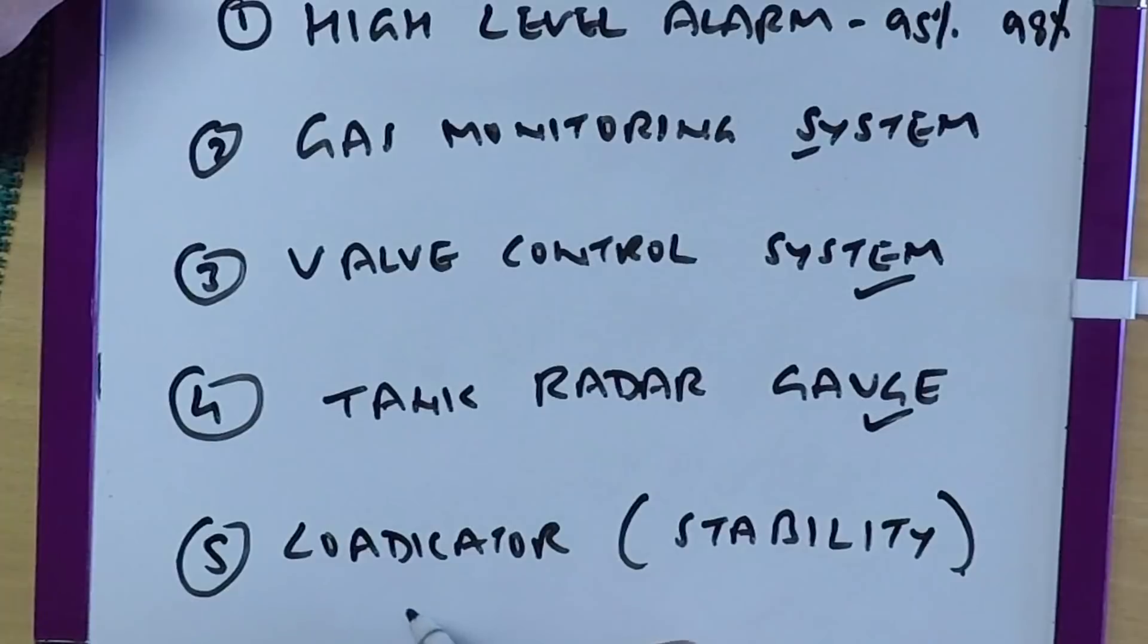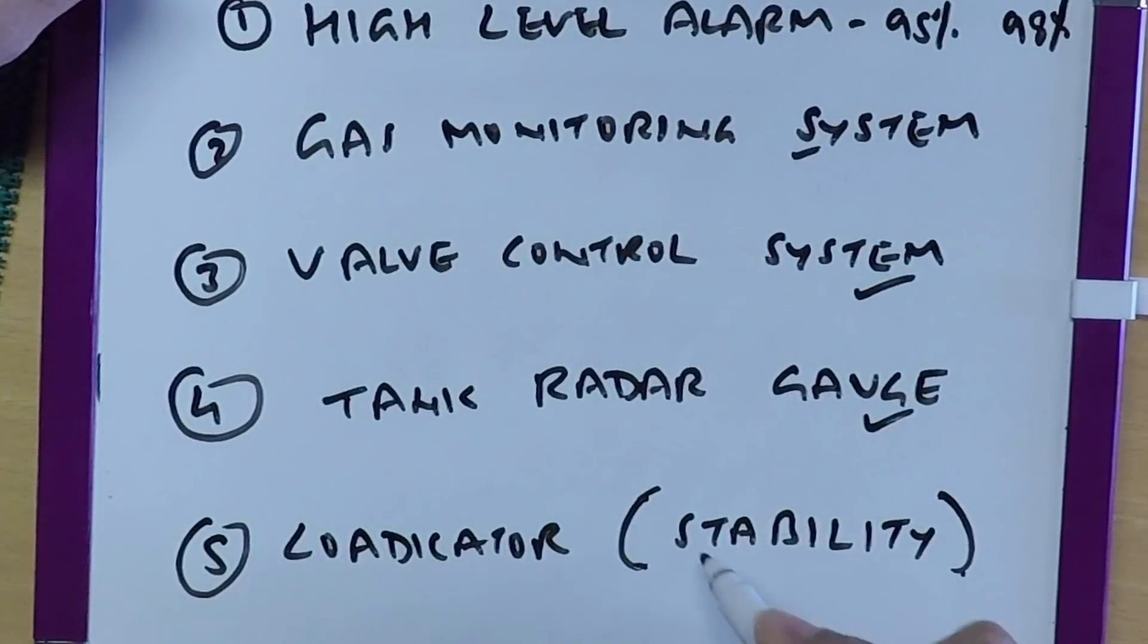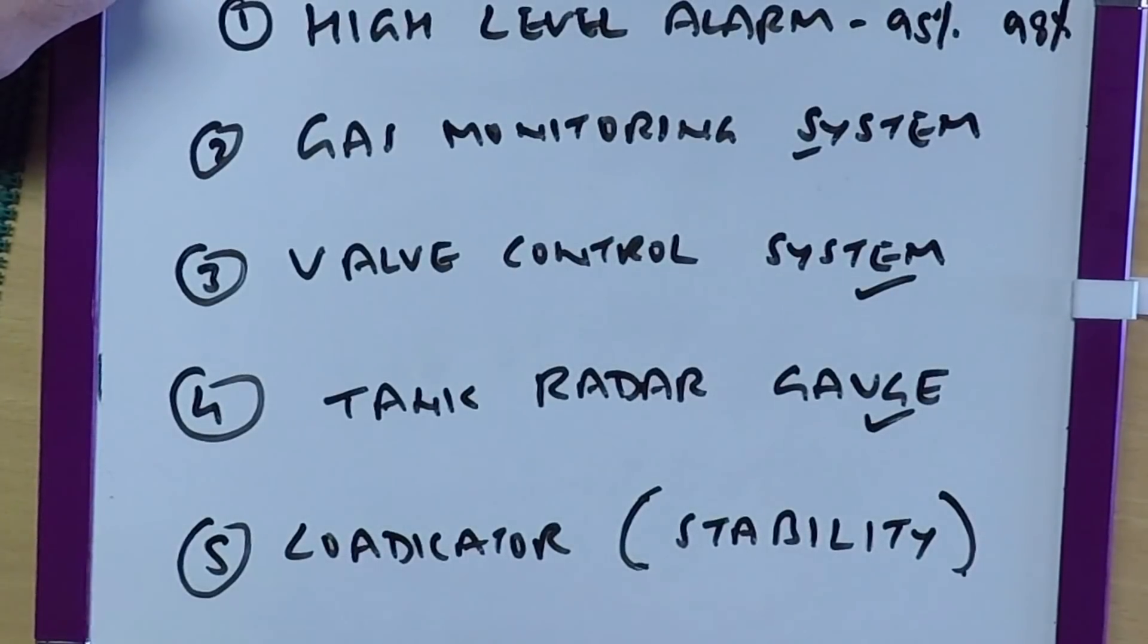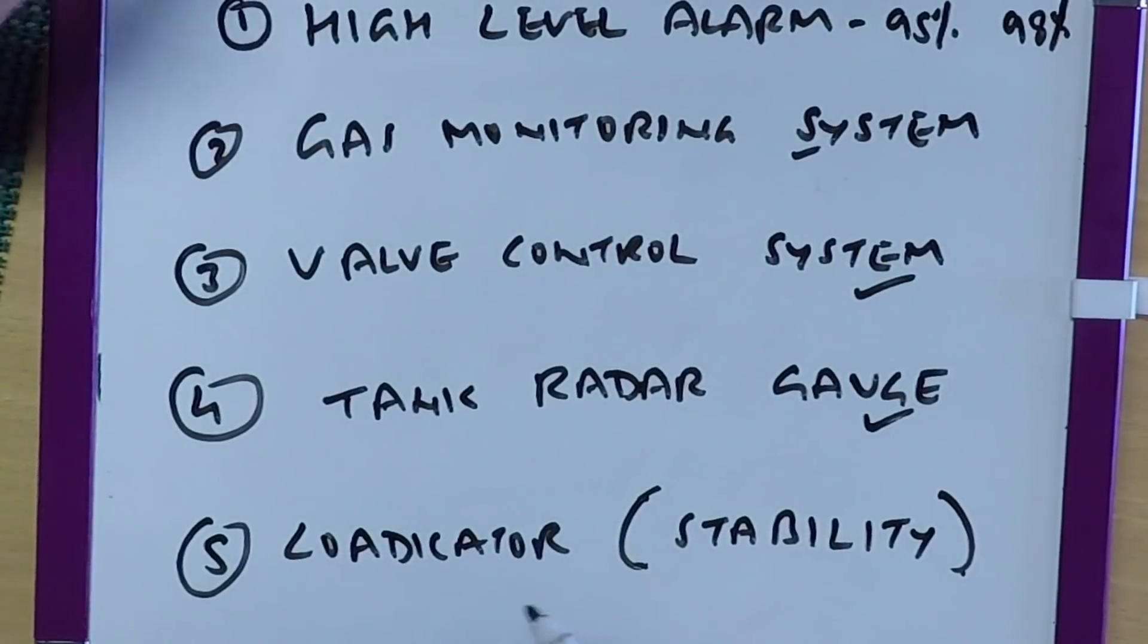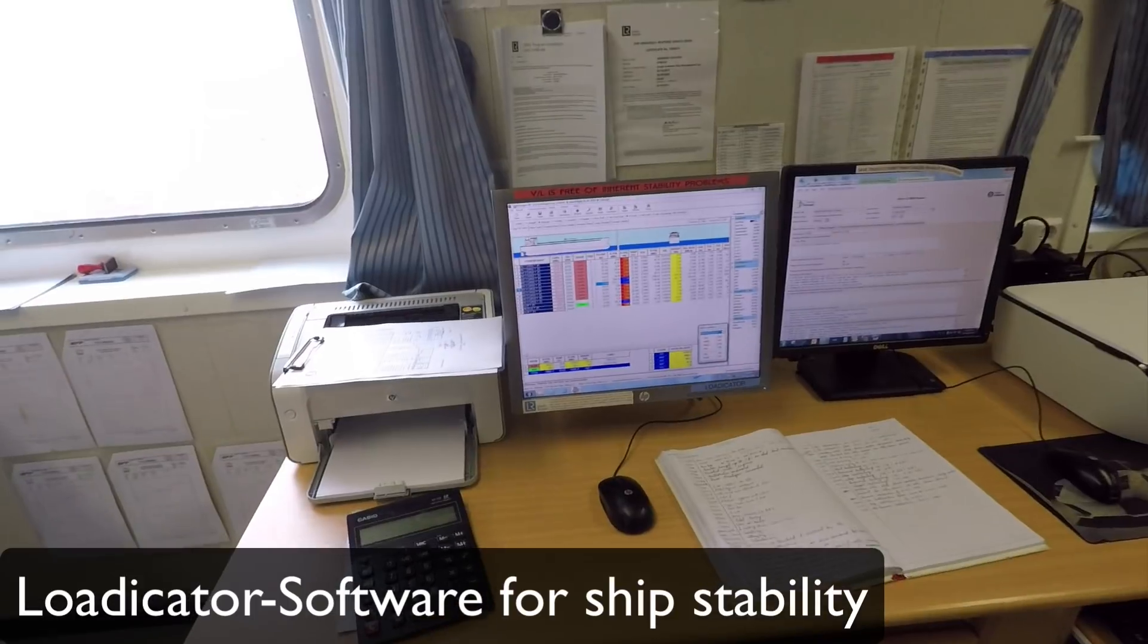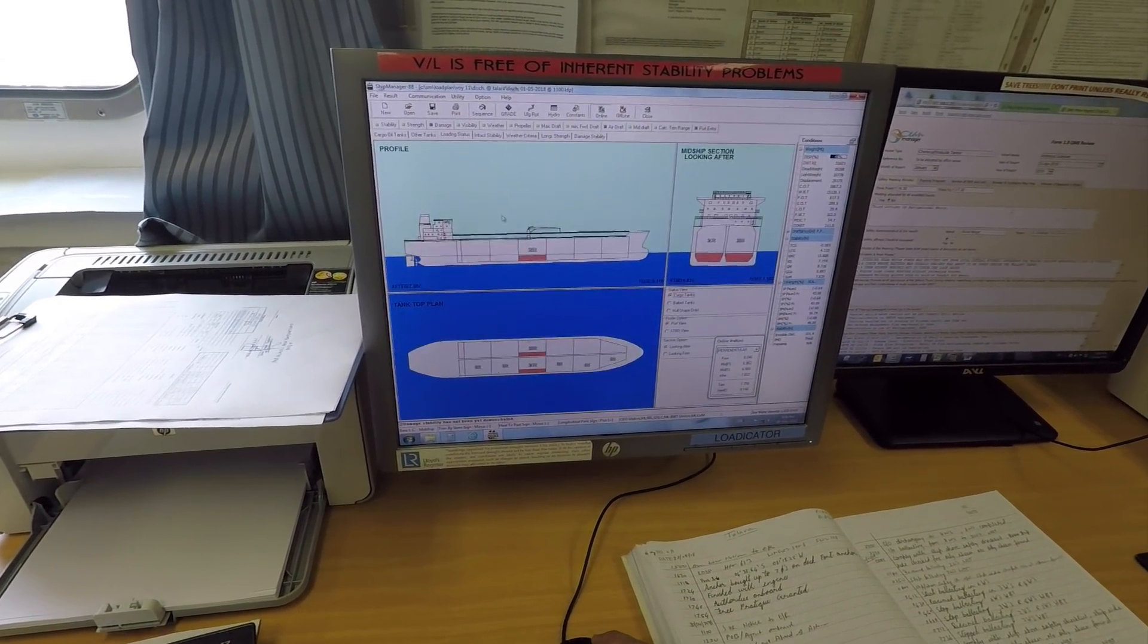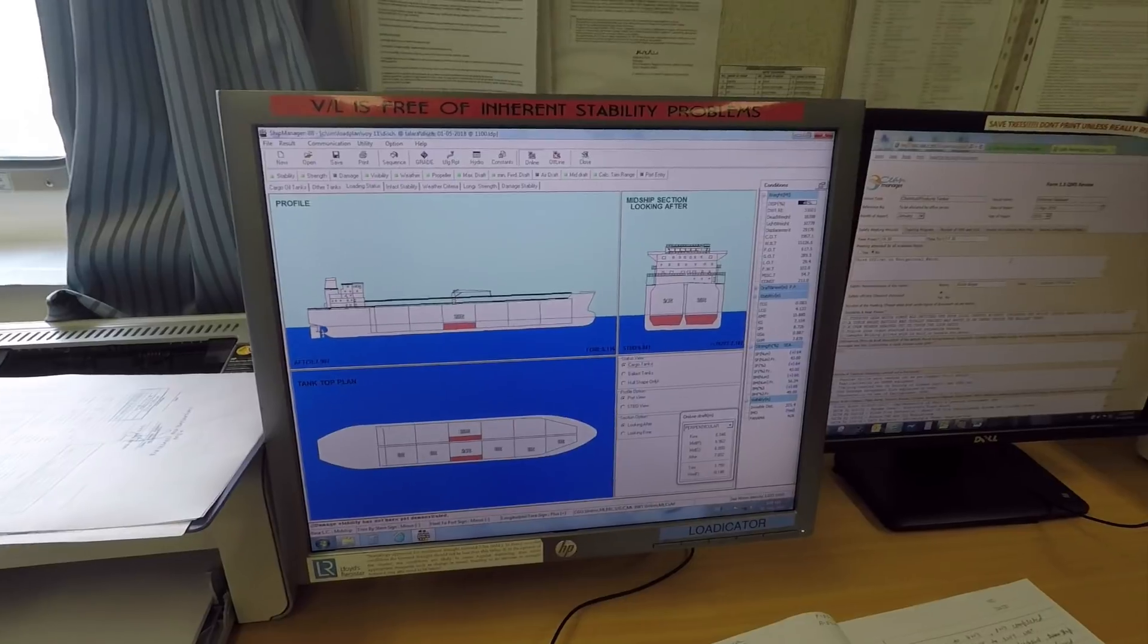Last but not the least is the loadicator. Somebody asked me to tell him about stability. So this loadicator is a software which is class approved. We plan cargo operations in stage-wise, two-hourly, four-hourly, six-hourly stages, and each stage we exactly know how much cargo and how much ballast needs to be on board. If we are loading, we know at what rate we have to load, and accordingly at what rate we have to discharge ballast. The ship's stability is calculated on the loadicator, the class-approved loadicator, which has all the tanks on it. You can toggle between the menus, and it calculates and it gives you a plan view, end-on view, and side view of the ships along with all these details.